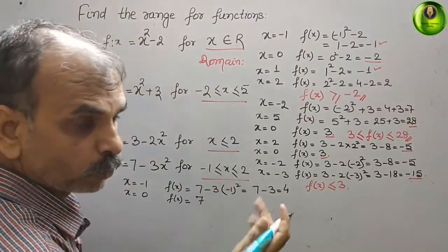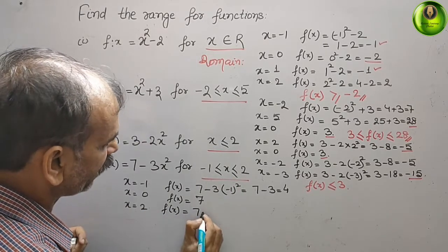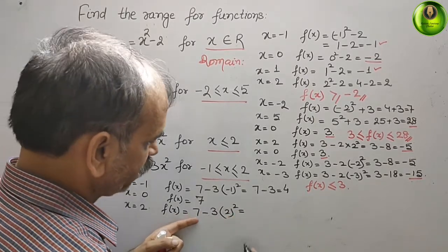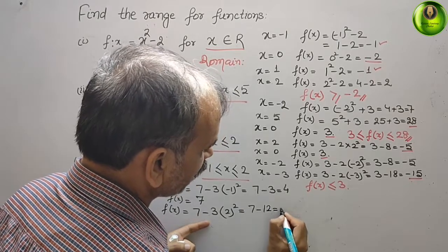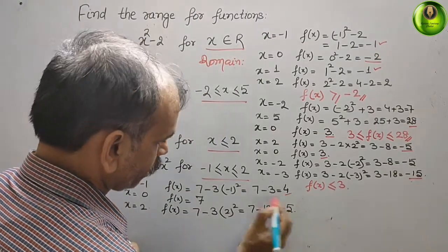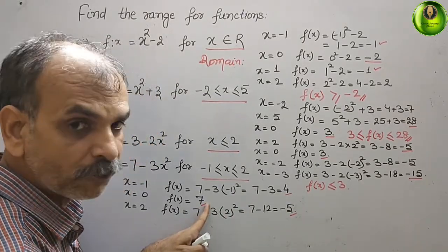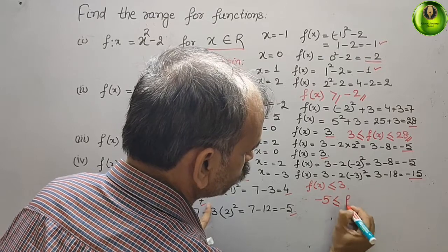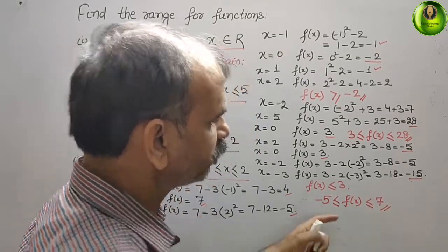Next take x = 2: f(x) = 7 - 3(2²) = 7 - 12 = -5. Comparing the three values: -5, 4, and 7 — the minimum is -5 and the maximum is 7. Therefore the range is -5 ≤ f(x) ≤ 7.